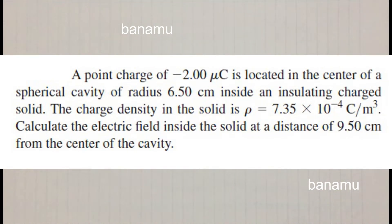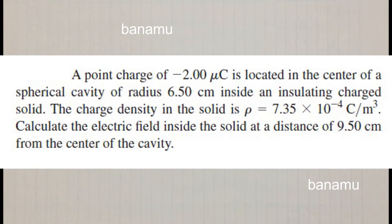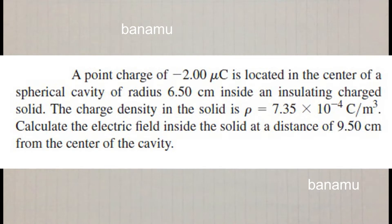A point charge of minus 2 micro coulomb is located in the center of a spherical cavity of radius 6.5 cm inside an insulating charged solid. The charge density in the solid is rho equal to 7.35 × 10⁻⁴ coulomb per meter cube. Calculate the electric field inside the solid at a distance of 9.5 cm from the center of the cavity.